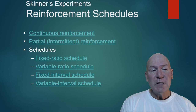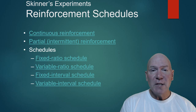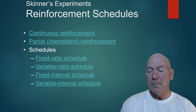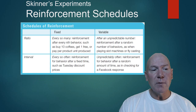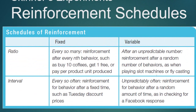Partial reinforcement schedules work really well, and we have different types: fixed ratio, variable ratio, fixed interval, and variable interval. When we talk about ratio, think of it as number — for every certain number of times you do something, you'll be reinforced. It may be fixed or variable.